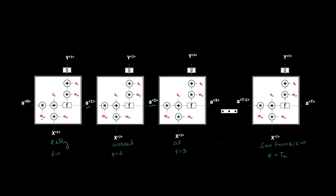Regarding the naming convention: the weight matrix names like Waa, Wax, and Wya are structured so the second character represents what quantity it is multiplied with — Waa is multiplied with a, Wax with x, and Wya with a. The first character represents what it is producing: Waa and Wax both produce a, while Wya produces y.